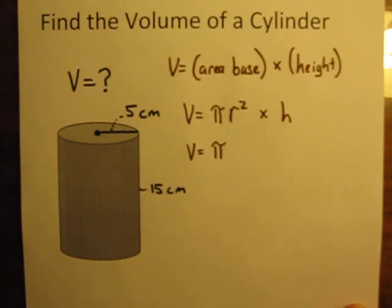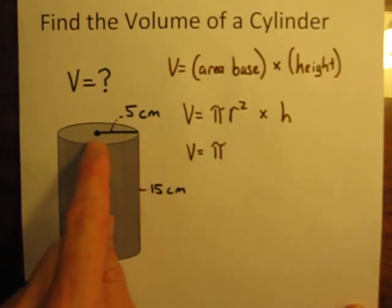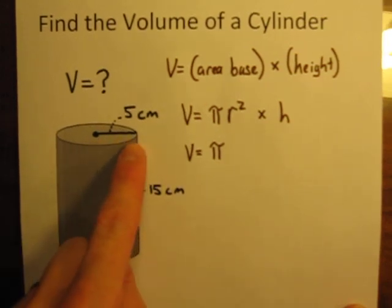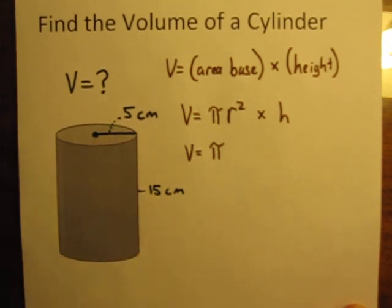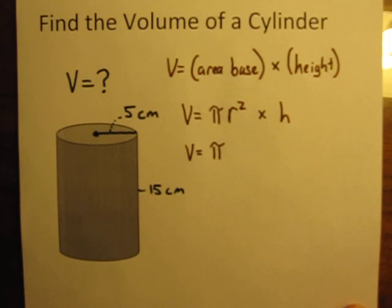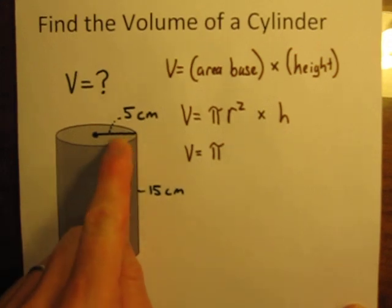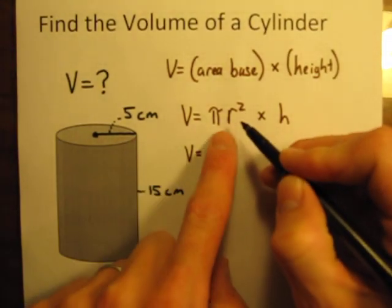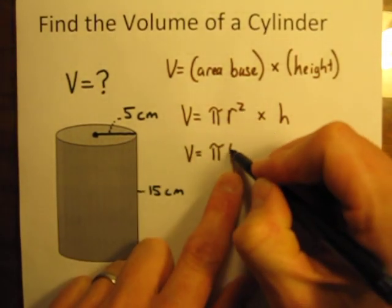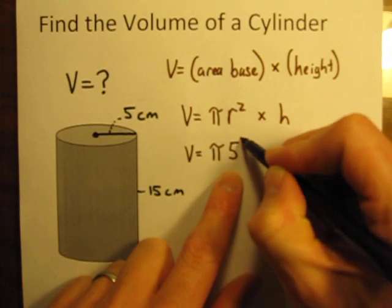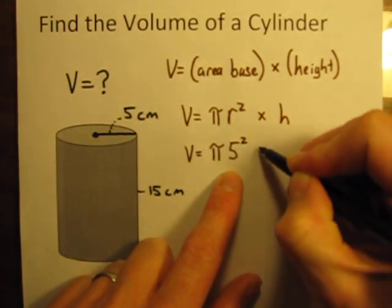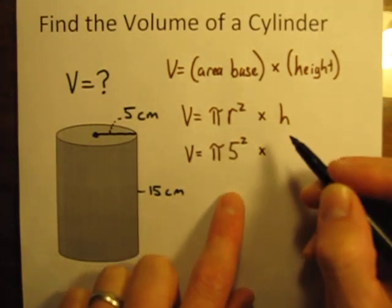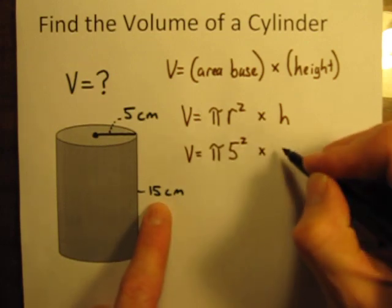One thing you have to be careful of is sometimes problems will give you the radius of this circle, sometimes it will give you the diameter. If it gives you the diameter, make sure you cut it in half to get the radius. But in this case, it actually does give us the radius. The radius is 5, so in place of r in our formula, I'll put in 5. So now it's 5 squared times what's the height of our cylinder? The height is 15.